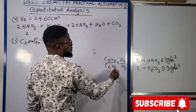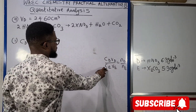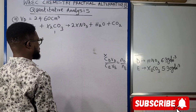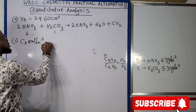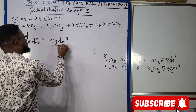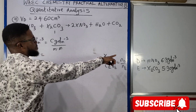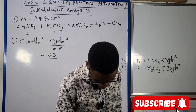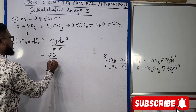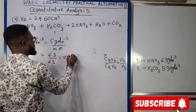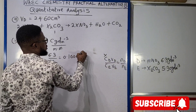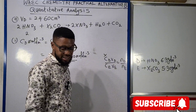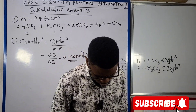I cannot use the formula cd·vd / ce·ve = nd/ne because I don't know the concentration of E in mol/dm³. This is actually a very direct question: concentration in mol/dm³ equals concentration in g/dm³ divided by molar mass. The concentration of HNO₃ in g/dm³ is 6.3, and the molar mass of nitric acid is 63 g/mol. So 6.3 divided by 63 gives 0.1 mol/dm³. That is the concentration of D in mol/dm³.